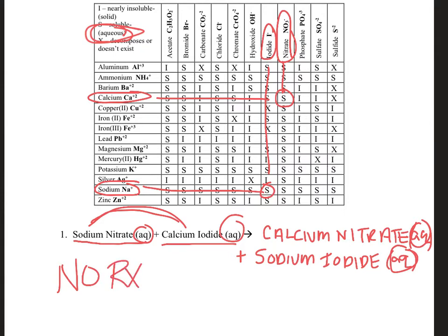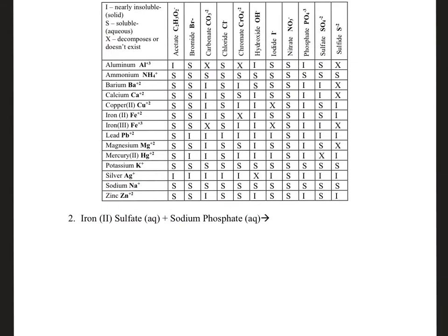So we can say that no reaction happens. Why? Because there's no solid that's formed. It would just be two beakers of fairly clear liquid mixing together, and it would look the same afterwards — we really wouldn't notice any reaction. If we look at number two for a double replacement, we have a compound and a compound, both aqueous.